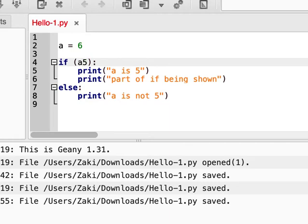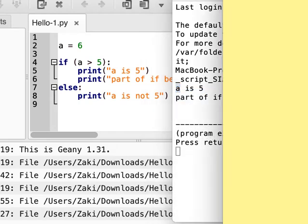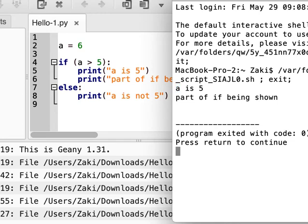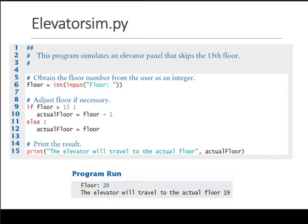Let's say a is greater than 5. So my condition now is if a is greater than 5, go here; else go here. Run it. It surely goes in the first block. "A is 5"—oops. A is 5 and "part of if being shown"—these two lines are executed because this is true.